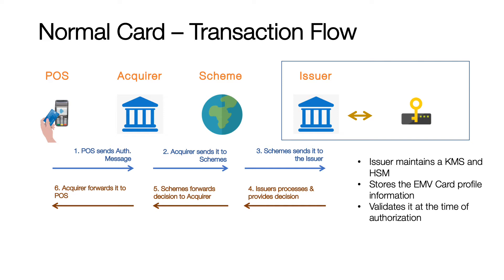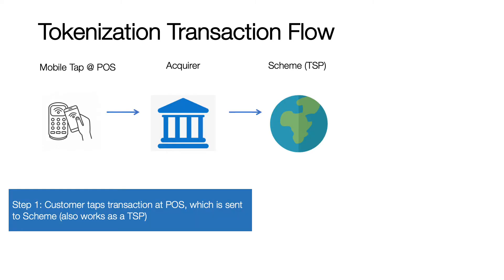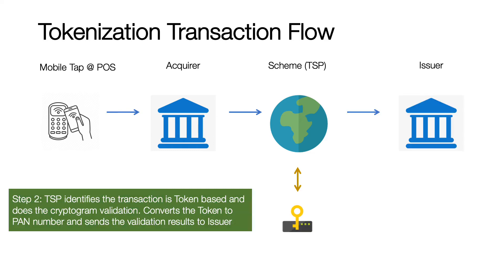This is very important. The next slide covers why. In the case of a tokenization transaction flow, just like a chip card is presented at a POS terminal, there would be a mobile device, a key fob, or any NFC-based device where the EMV card profile has been issued, presented at a terminal. The ecosystem of how a transaction flows between an acquirer and a scheme does not change for tokenization-based transactions. For this video, I have assumed that the scheme also acts as a TSP, which is true in the majority of cases.